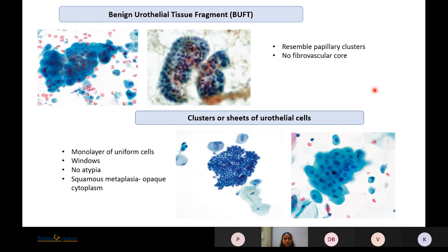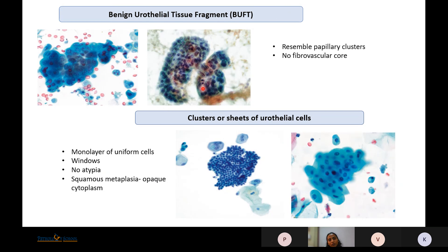Benign urothelial tissue fragments resemble papillary clusters or tight cohesive groups. They have pale chromatin with prominent nucleoli and sharply demarcated borders. Previously assumed related to high-grade urothelial carcinoma, recent studies show their benign nature. One case was wrongly labeled as high-grade urothelial carcinoma but biopsy revealed it was just hyperplasia with papillary hemangioma — the papillary clusters showed no nuclear overlapping, and what appeared as fibrovascular core was a sub-epithelial hemangioma.